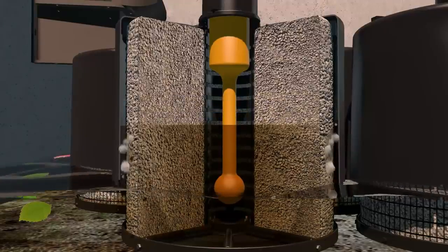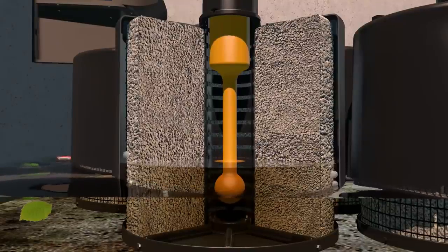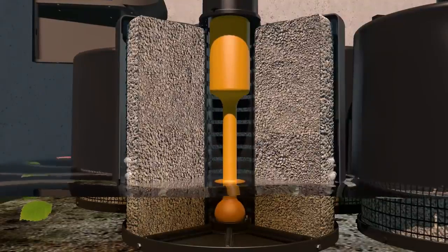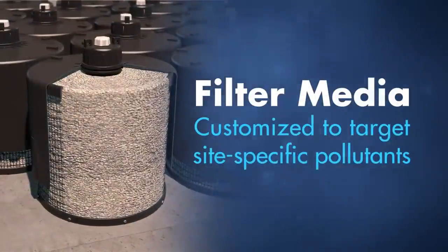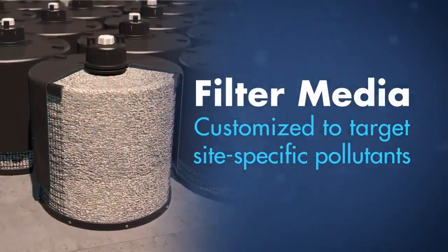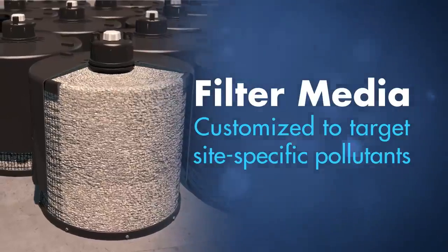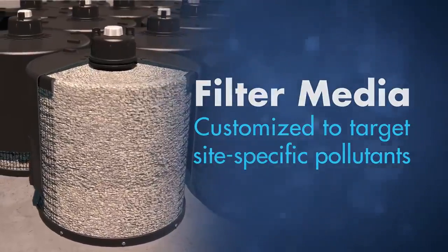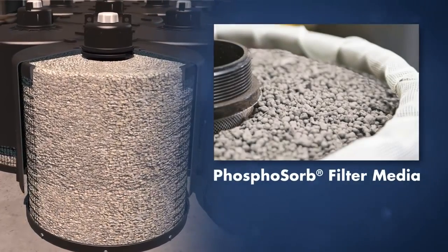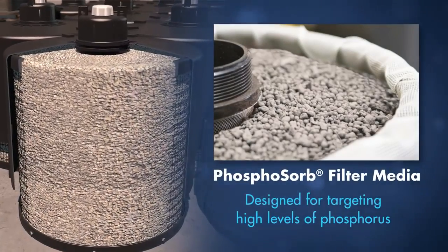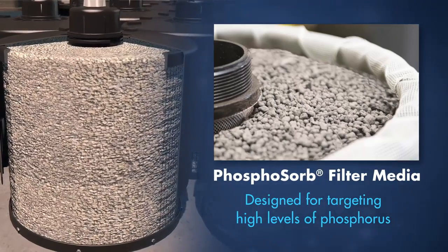This patented surface cleaning mechanism helps restore the permeability of the filter surface during drain down and between storm events. The filter media in the storm filter cartridges can be customized to target site-specific pollutants. For example, in applications targeting phosphorous, CONTEK developed Phosphosorb — a unique filter media designed specifically for applications targeting high levels of phosphorous removal.